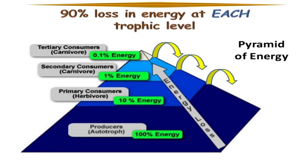As we know, this is the food chain from year 9: producers, then primary consumers, secondary consumers, then tertiary consumers. Before producers is the sun, because the sun is the principal source of energy input to all biological systems. Producers, the autotrophs, take up 100% of the energy. 10% energy is used by the primary consumer, 1% by the secondary consumer, and the last consumer takes up 0.1%. So 90% of the energy is lost at each trophic level, and only 10% remains.